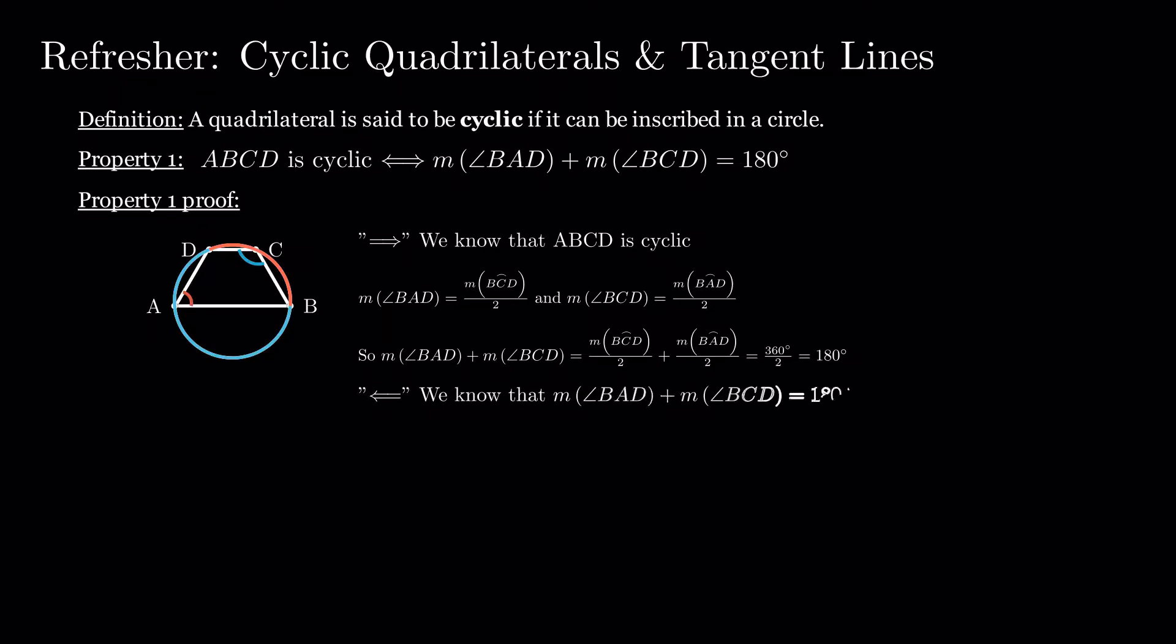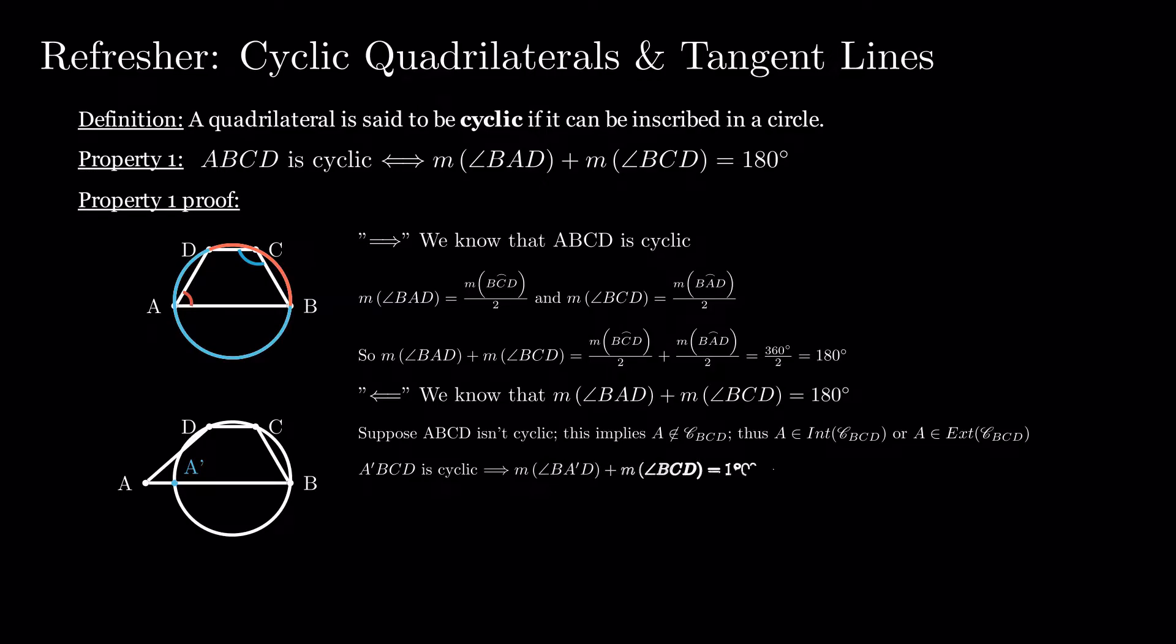To prove the backward direction, we know that angle BAD and BCD are supplementary. Let's assume, however, that ABCD is not cyclic. This implies A is not on the unique circle passing through BC and D. We can assume A is in the exterior of the circle. Let's denote with A prime the intersection of BA with this circle. As A prime BCD is cyclic, by our first implication we have BA prime D plus BCD equals 180 degrees. But we know that BAD plus BCD equals 180 degrees, implying BAD equals BA prime D.